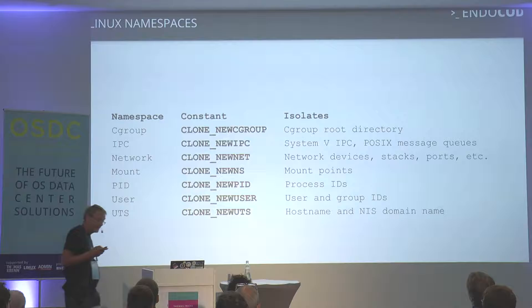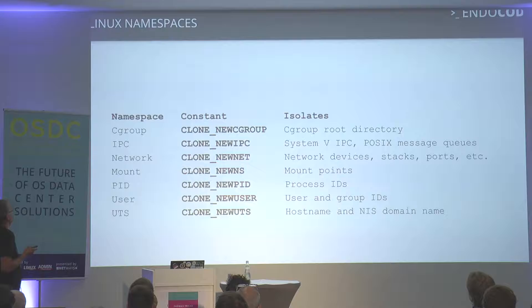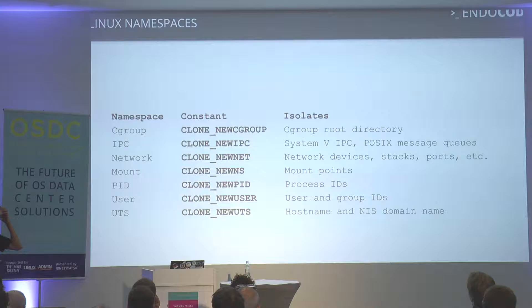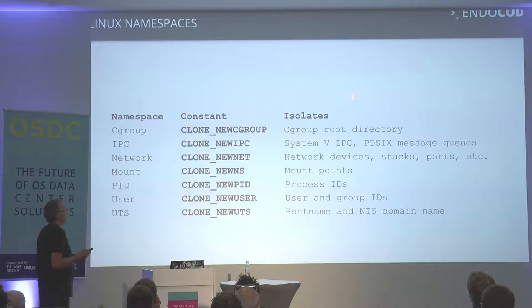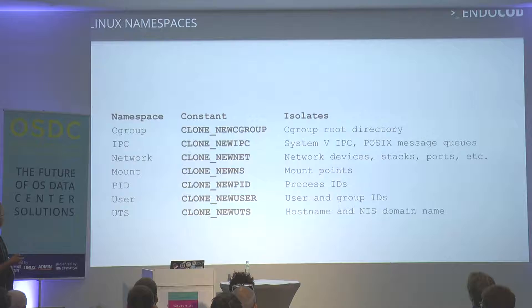Let's talk about namespaces. Even experienced Linux admins are often unaware of what these are. There's cgroup — more or less a performance namespace — which restricts CPU cycles and memory for a process. You can put a cgroup around a process to define how much memory and CPU it gets. There's an issue with Java historically ignoring this, but the latest versions should handle it correctly.